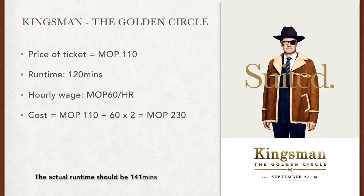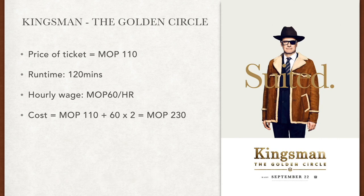Let's look at an example. Assume you work in a restaurant as a part-time waiter and you are paid $60 per hour. On a random Saturday, you want to skip your work and go watch the movie Kingsman. The movie ticket costs you $110 and it will take two hours to watch the movie. So the question is: if you choose to go watch the movie Kingsman, what is your opportunity cost?